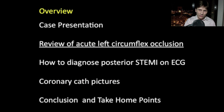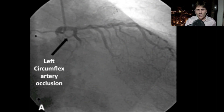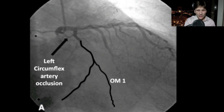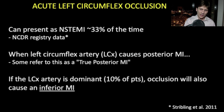Let's review acute left circumflex occlusions — they're interesting and can present in various ways. This is important: acute thrombosis of the left circumflex will not always present as STEMI. A third of these will give you an NSTEMI. Remember, you're supposed to have a left circumflex with a few obtuse marginals coming off it, and if you're left dominant, you'll also have a PDA. This is an occluded left circumflex, very proximal. NCDR data says that 33% of these patients with acute thrombosis of the left circ have an NSTEMI.